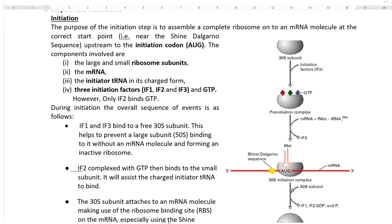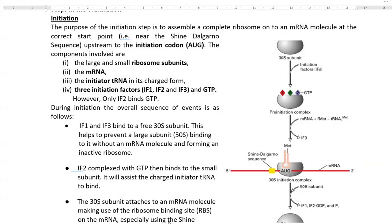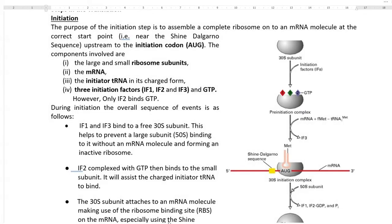The components involved in initiation include the small and large subunits of the ribosomes, the mRNA molecule, and the initiator tRNA — that is, the methionyl tRNA in its charged form. Charged form refers to the addition of GTP or ATP energy to the tRNA molecule. Three initiation factors — IF1, IF2, and IF3 — are involved, along with GTP as an energy source. Notably, it is only IF2 that effectively binds to GTP to start the initiation process.